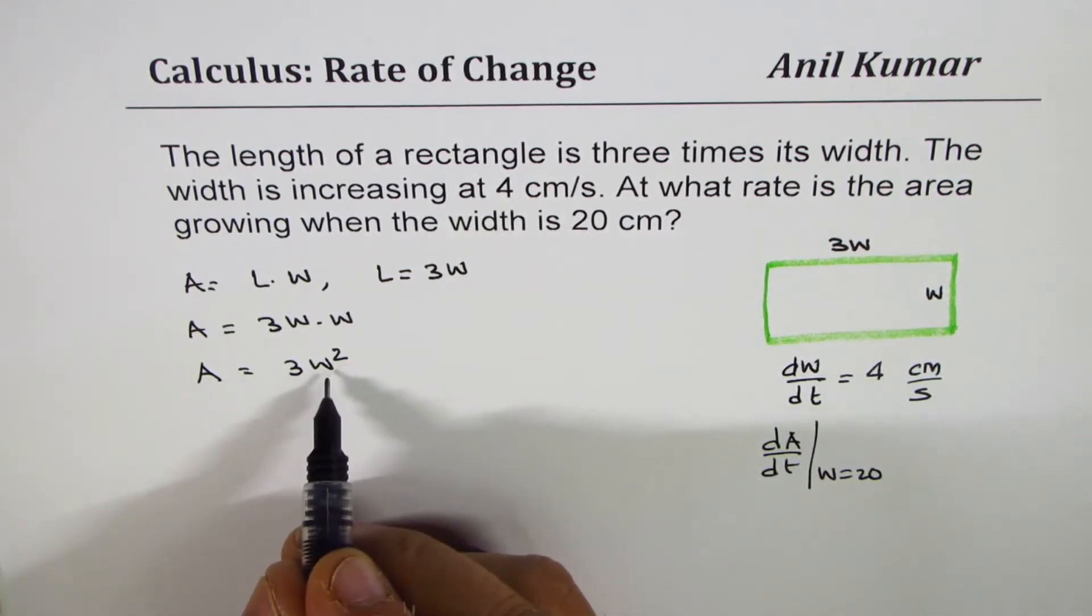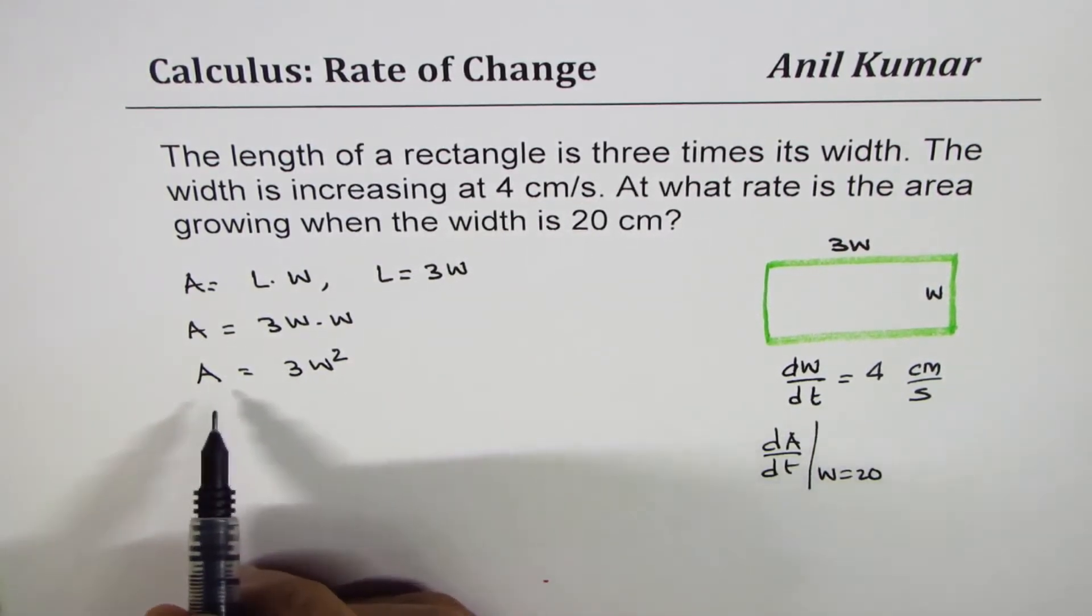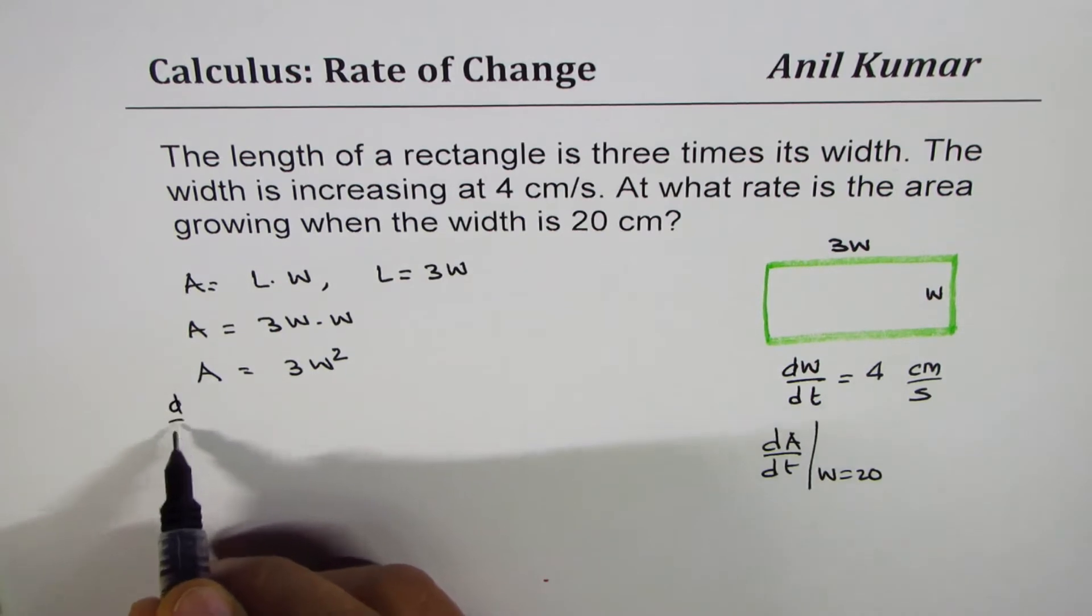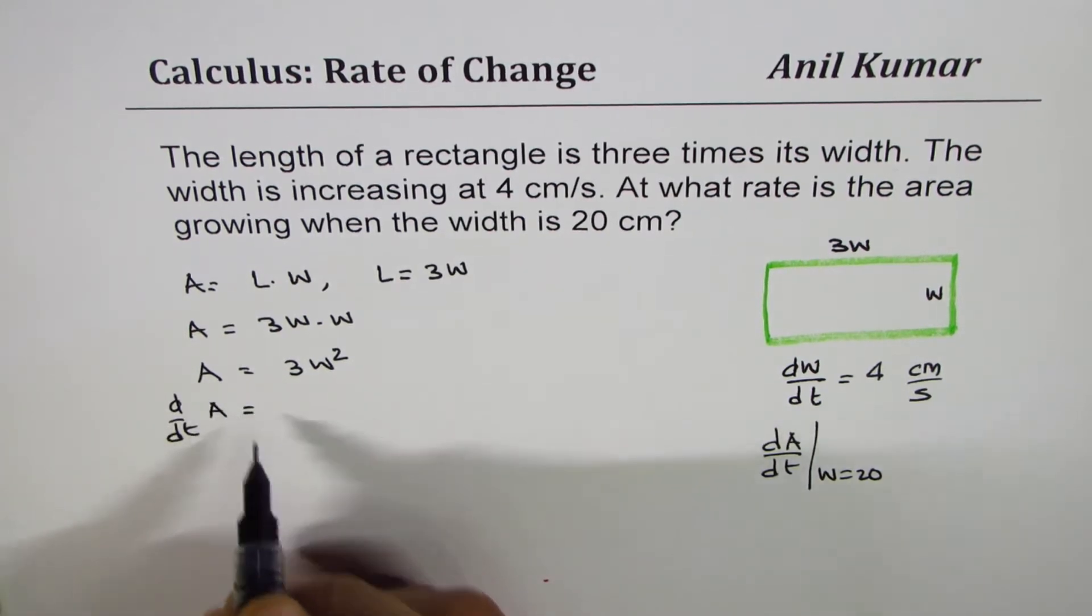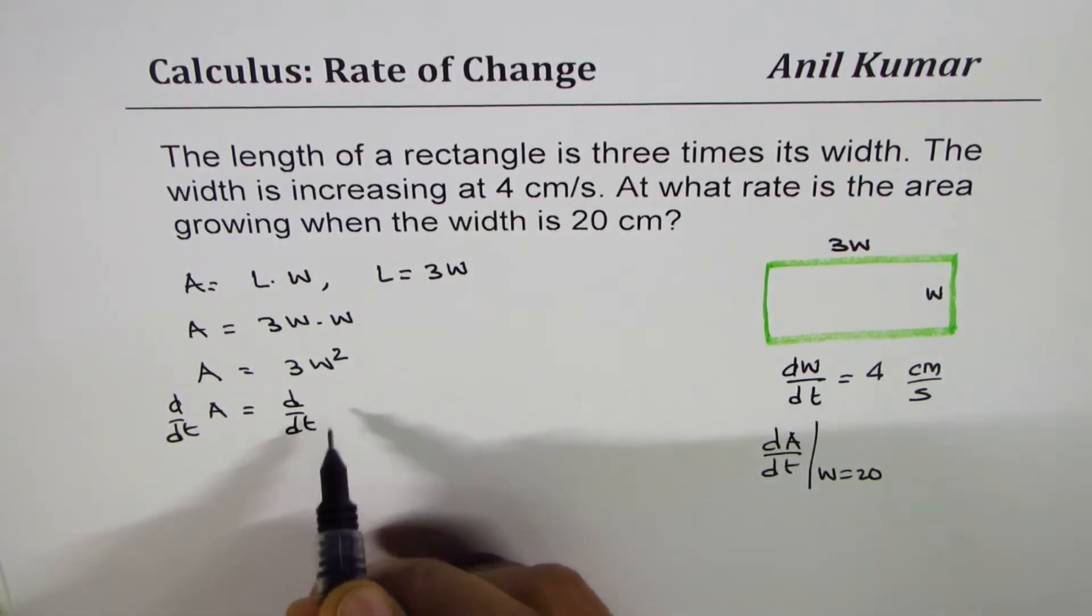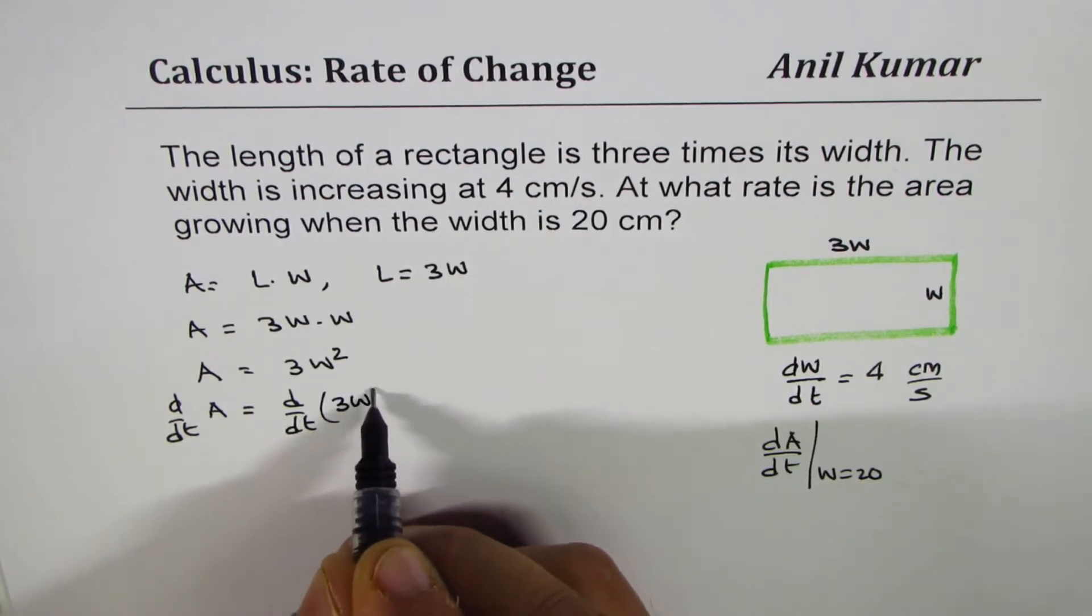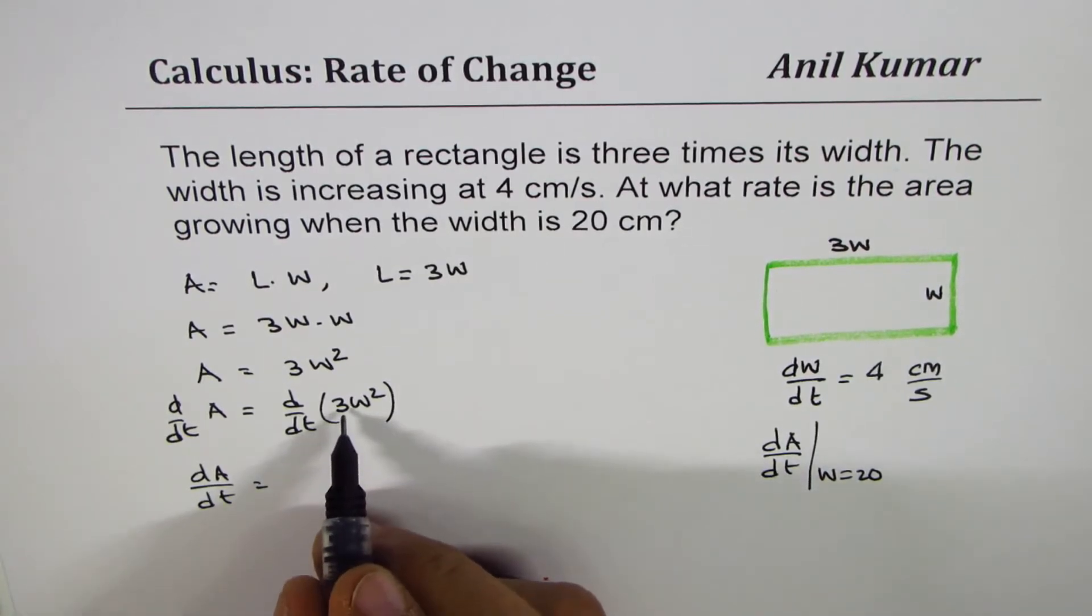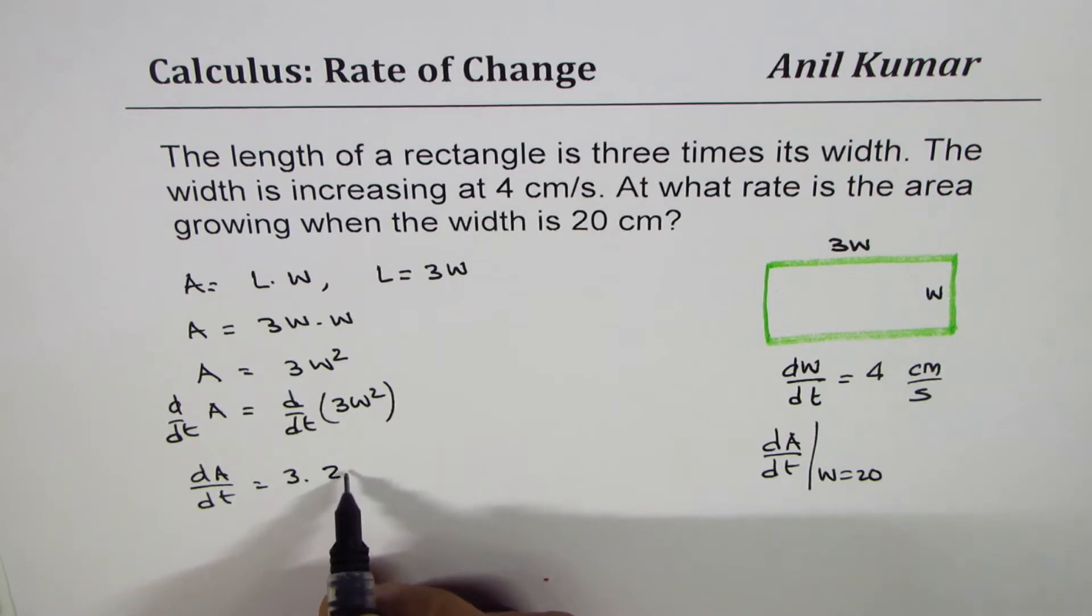Now let's do differentiation with respect to time using implicit derivation. d/dt of area equals d/dt of 3W squared. This gives us dA/dt equals 3 times 2W times dW/dt, which is dA/dt equals 6W times dW/dt.